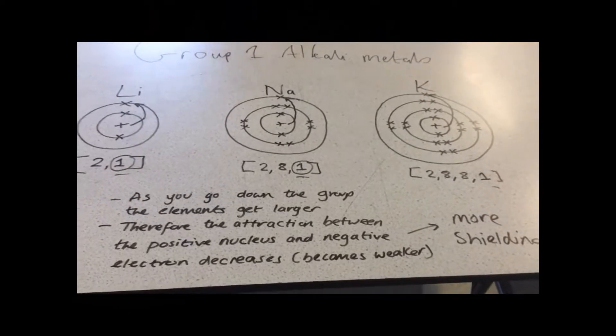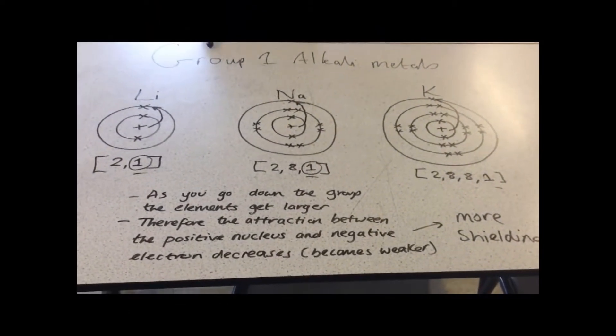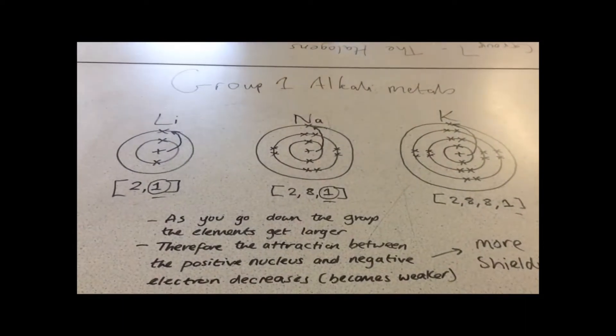Okay, so we've looked at Group 1, the alkali metals, and a very common question is to compare the reactivity of Group 1 with Group 7.